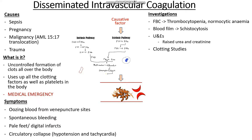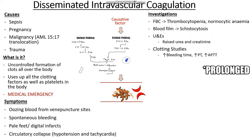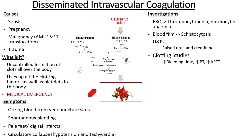On clotting studies we're going to see a raised bleeding time because we've used up all our platelets and impacted primary haemostasis. We're also going to see a raised PT and raised APTT, as we've used up clotting factors from both the intrinsic and extrinsic pathway. So the classic picture for someone with DIC is a prolonged bleeding time, PT, and APTT. As a quick side note, bleeding time is no longer used clinically — I've included it as question banks often refer to this classic picture — but just to reiterate, bleeding time is no longer used.